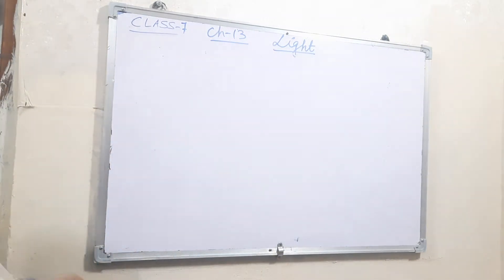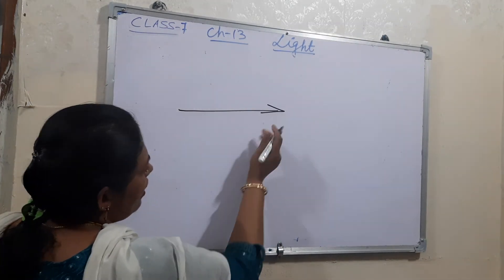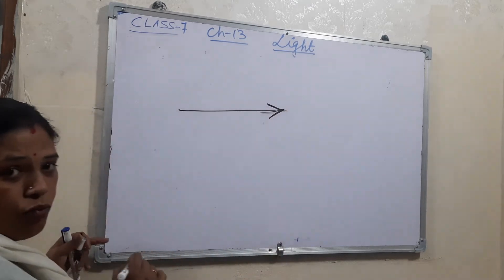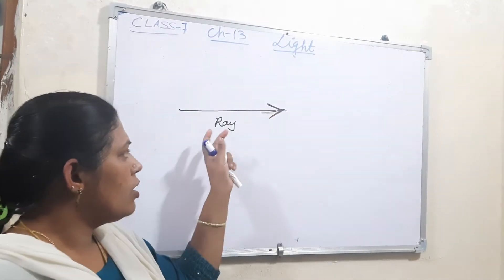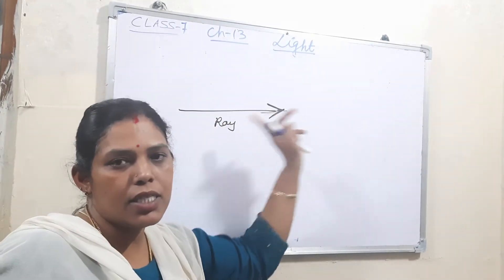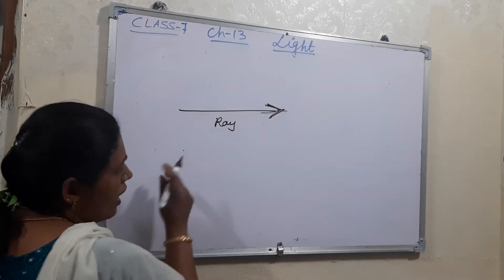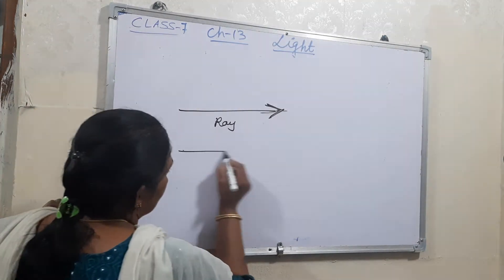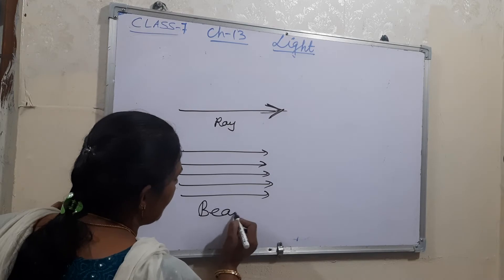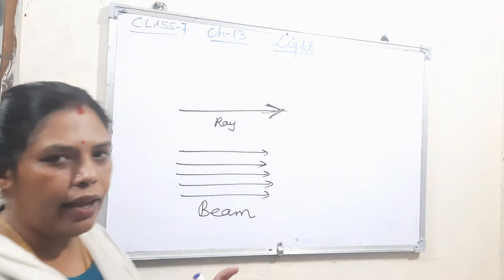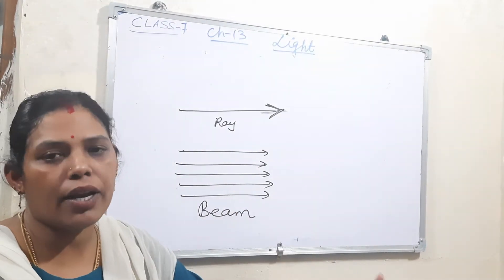The arrowhead shows the direction in which the light is moving. That is called a ray. If a number of rays pass together, that is known as a beam. So a single straight line with an arrowhead is a ray, and a group of rays moving together is known as a beam.